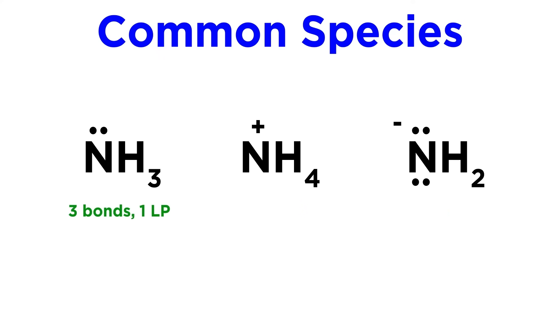Then for nitrogen, we have three bonds and one lone pair, four bonds and no lone pairs, or two bonds and two lone pairs.